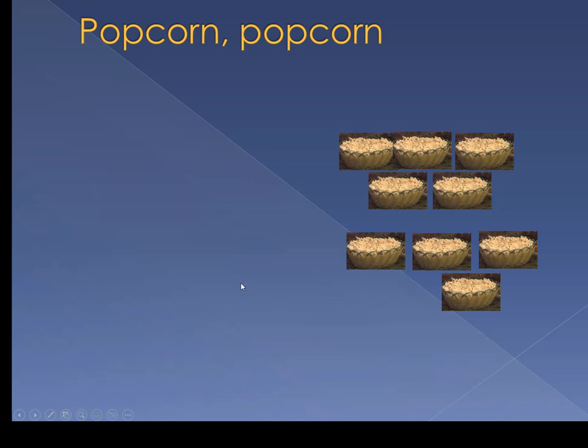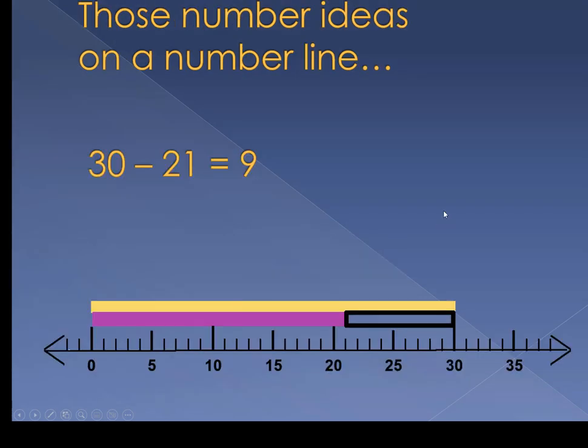After we take away the part they sold from the whole, they have 9 bowls of popcorn left. Here are those number ideas on a number line. 30 minus 21 equals 9. The whole is 30, the parts are 21, and then we figured out the 9.